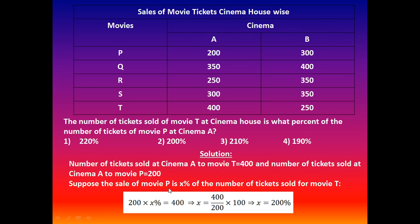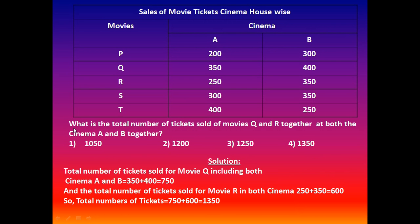Suppose the number of tickets of movie P is x percent of the number of tickets sold for movie T. Then we write: 200 × x% = 400, which implies x = (400 / 200) × 100 = 200. So option number 2 is correct and the answer is 200 percent.